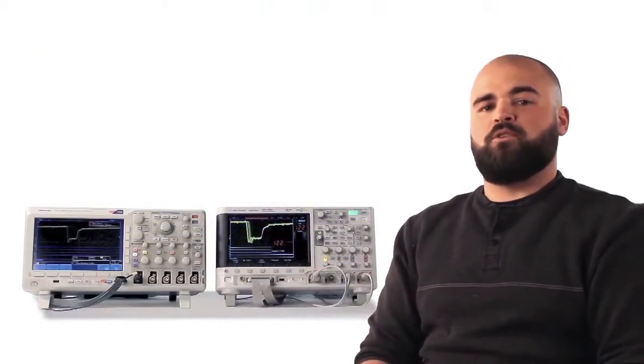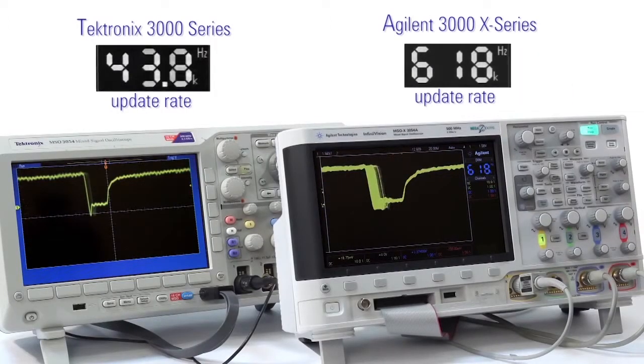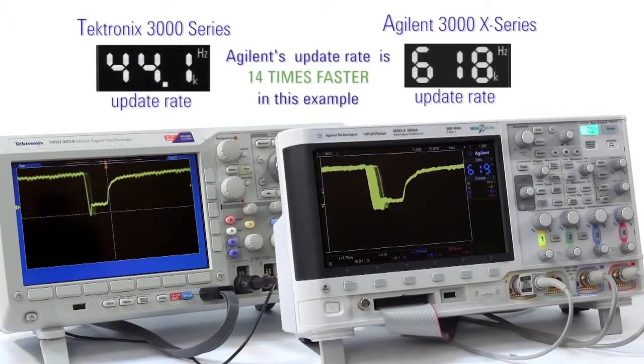Next, let's look at the importance of update rate. We have connected the triggered output of each scope to a frequency counter. You can see Agilent is updating at 618,000 waveforms per second. Tektronix is updating at 44,000 waveforms per second.